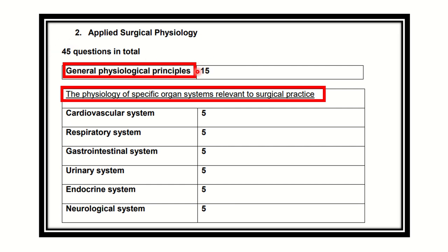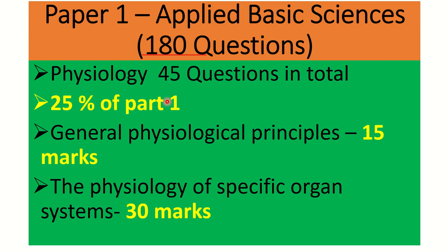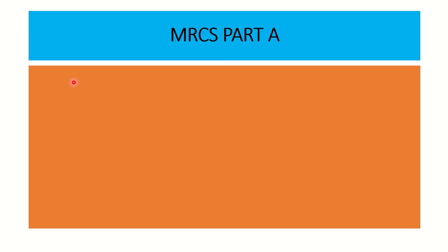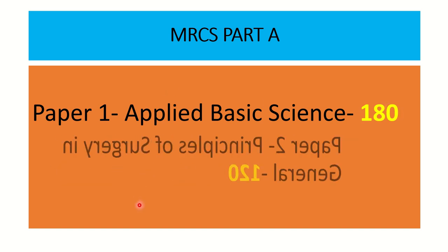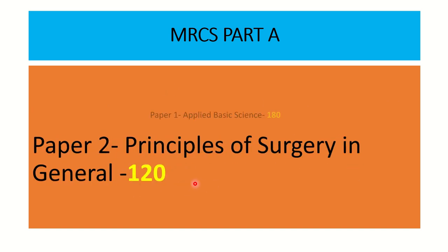So the total physiology syllabus adds up to 45 marks — 15 from general physiological principles and 30 from specific organ-related systems — carrying about 25 marks in total in the MRS Part A exam Paper 1. Thank you all.